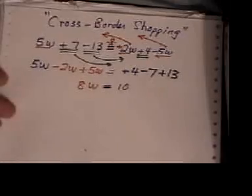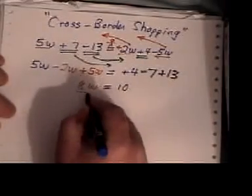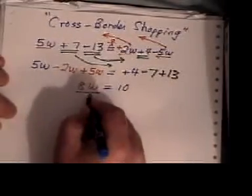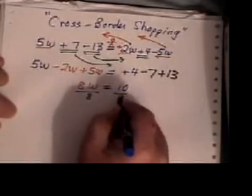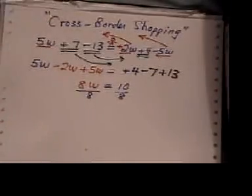Now we're back to doing our division. The opposite of multiplying by 8 is dividing by 8. But whatever you do to one side, you must do to the other side.